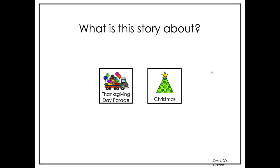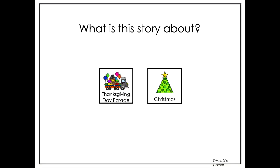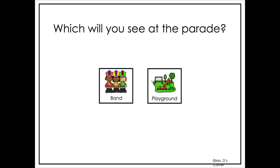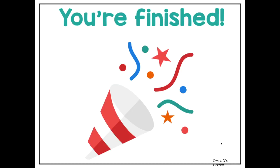What is this story about? Again, if they click an incorrect answer, it's going to prompt them to try again and they have to click the correct answer to move forward. Where is the parade? This is an opinion question, so no matter which one they click, it'll get them to move forward.